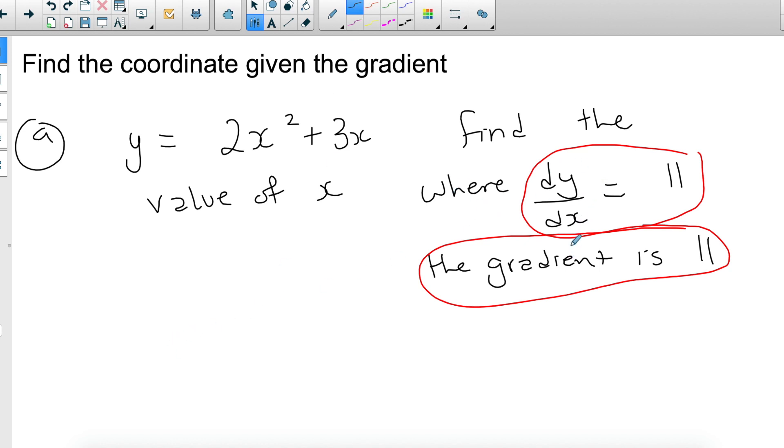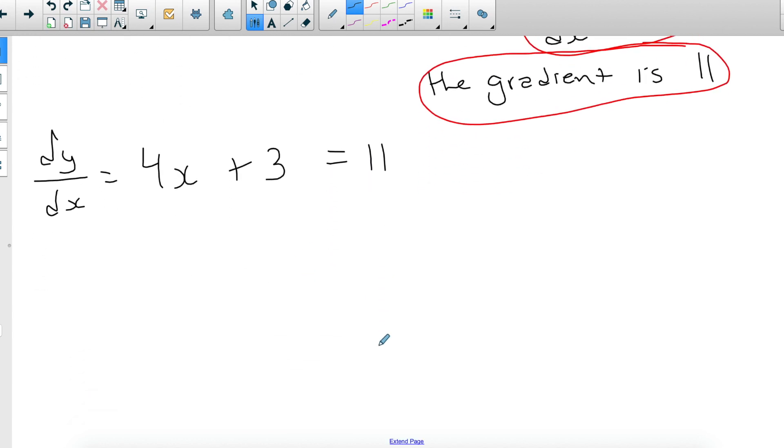So what this means is that you need to differentiate the function, and what it's saying is that the derivative is equal to 11. So let's find the derivative and make it equal to 11. So the derivative, which is dy/dx, for the first term is 4x, and then the second term will be 3. Now we need to force this to be equal to 11, and we need to find what x should I have substituted here to give me 11.